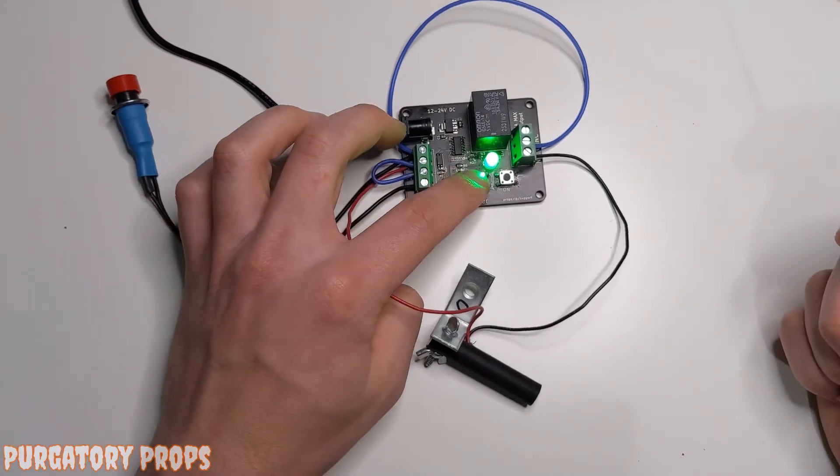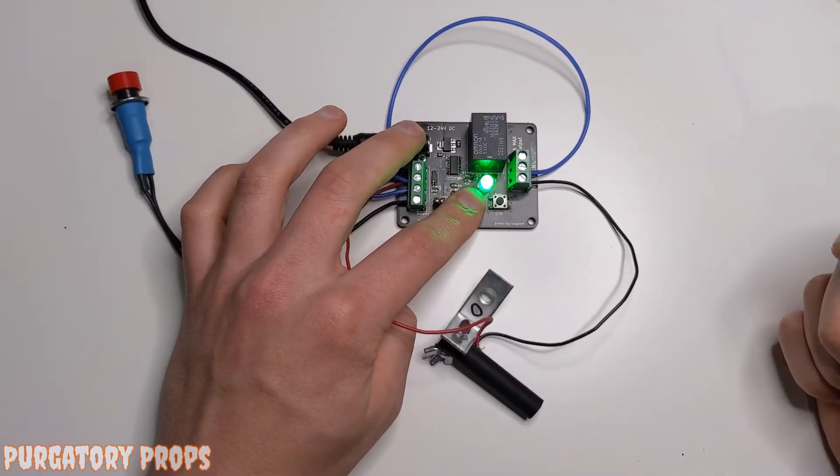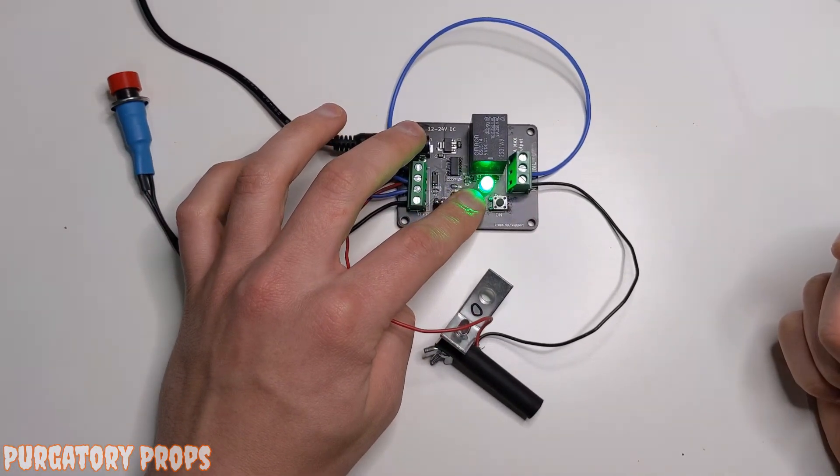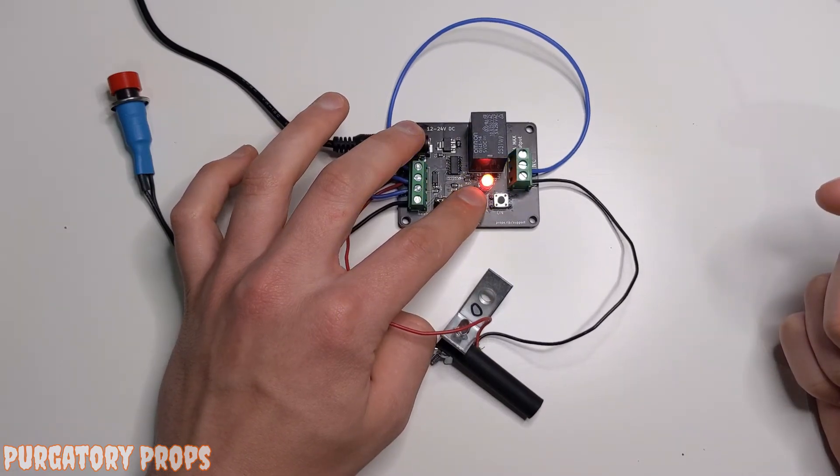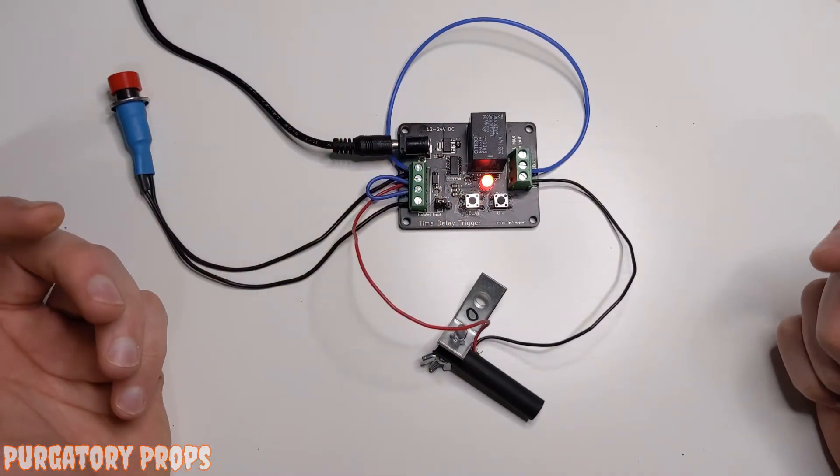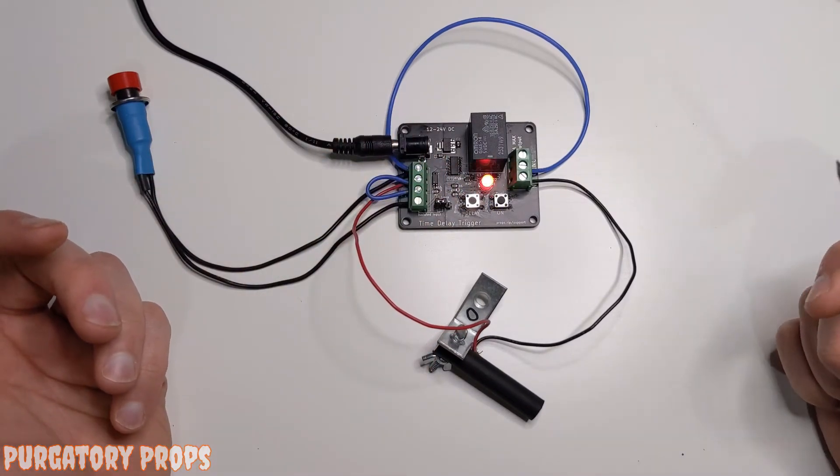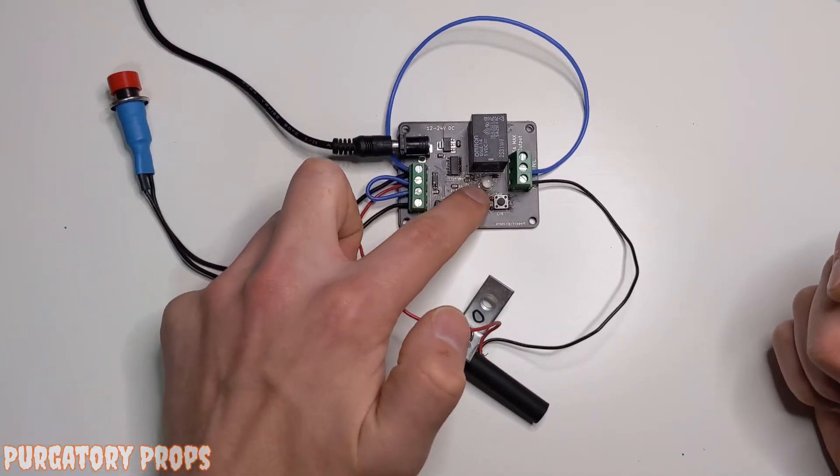If we want to change that, we can hold delay. When the LED turns blue, you can release and it will start recording time. Now it's flashing about once per second so you can use that for timing. When you reach the amount of time, just push delay again.